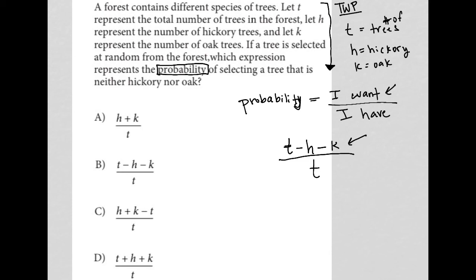Right? What I want is every tree that's not hickory, so subtract hickory, and not oak, so subtract oak. What do I have? Well, I have the whole forest. How many trees are in the forest? T number of them. Right? So here is my probability. And therefore, choice B is my answer.